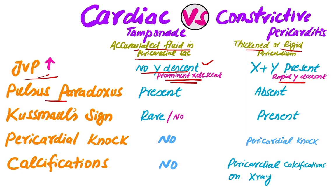Regarding pulsus paradoxus: in cardiac tamponade, pulsus paradoxus is present, but in constrictive pericarditis, pulsus paradoxus is absent. Kussmaul sign is rarely present in cardiac tamponade — usually it is absent — but in constrictive pericarditis, Kussmaul sign is present.